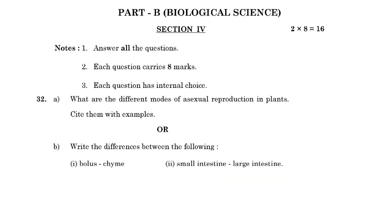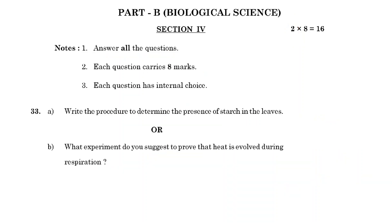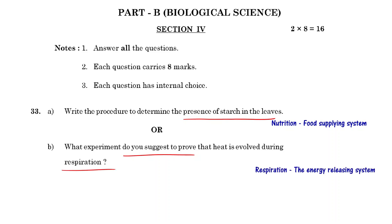Section 4 of Part B has two 8-mark questions with internal choice, giving 16 marks. Question 32: What are the different modes of asexual reproduction in plants with examples? (Reproduction chapter), OR write the differences in coordination in life processes. Question 33 (last question): Write the procedure to determine the presence of starch in leaves (Nutrition chapter), OR what experiment would you suggest to prove that heat is evolved during respiration? (Respiration chapter). Total 33 questions in the paper.